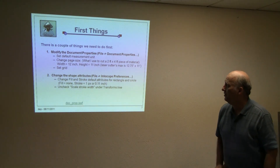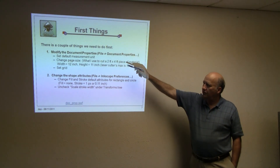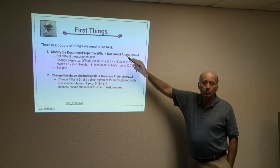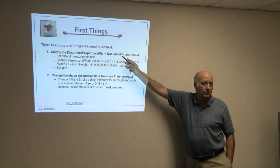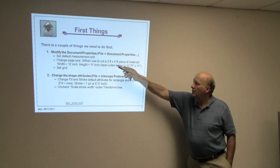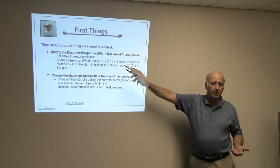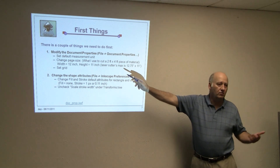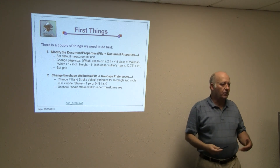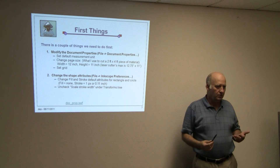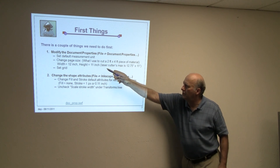Here are first things first — some things I recommend you do. Open up File > Document Properties. When I say this, I mean the file menu item and then the sub-menu item Document Properties. If you want to set the default measurement unit, I usually set it to inches. A lot of people like to set it to metric, but personally I set it in inches. Now, since a lot of what I'm doing is for the laser, I will change the page size to a width of 12 inches and a height of 11 inches.